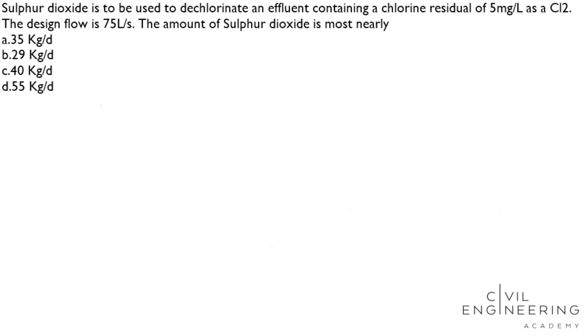Sulfur dioxide is to be used to dechlorinate an effluent containing a chlorine residual of 5 mg per liter as Cl2. The design flow is 75 liter per second. The amount of sulfur dioxide is most nearly.